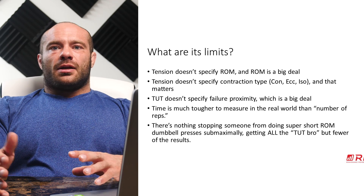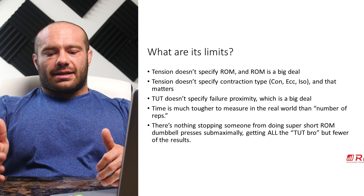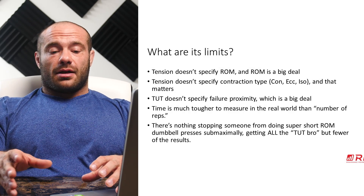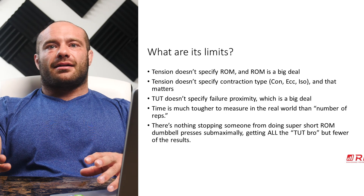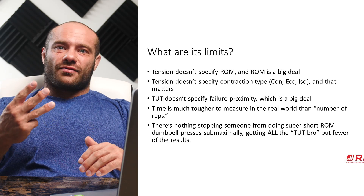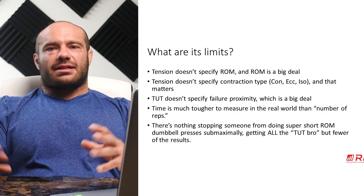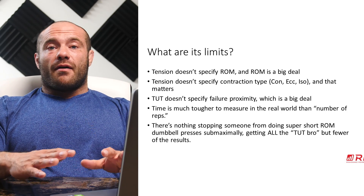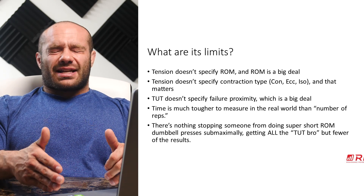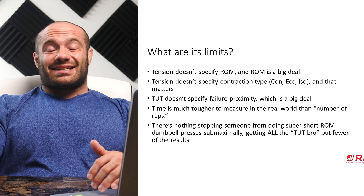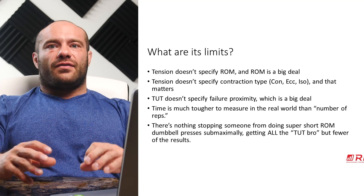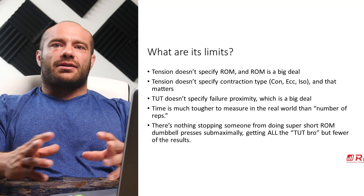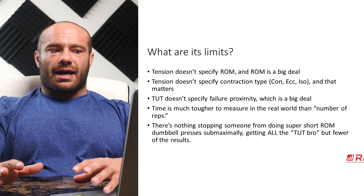TUT also doesn't specify failure proximity. Say you take your 20-rep-max weight and do six sets of 10. That's the same total time under tension as three sets of 20. But three sets of 20 is super close to failure, whereas stopping at 10 every time means your failure proximity is very low — each of those sets doesn't add up to those three sets of 20. You get way lower hypertrophy even though mathematically your time under tension was literally identical. That's because TUT has these limits when the close-to-failure condition isn't applied.